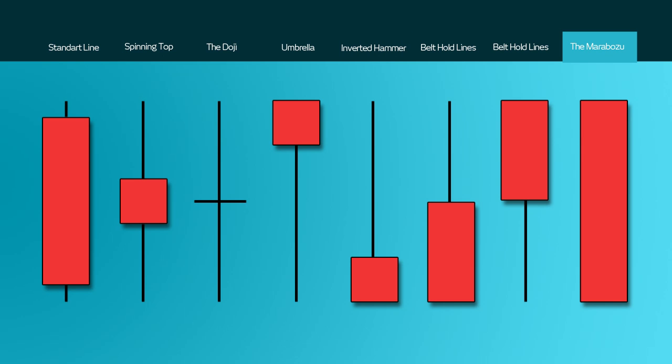The last graphical representation is the marubozu. These do not have any upper or lower shadows, and the high and the low are represented by the open or the close. A green marubozu forms when the open equals the low and the close equals the high, indicating that buyers controlled the price action from the first to the last. A red marubozu will generally mean that the bears led the price action downwards.